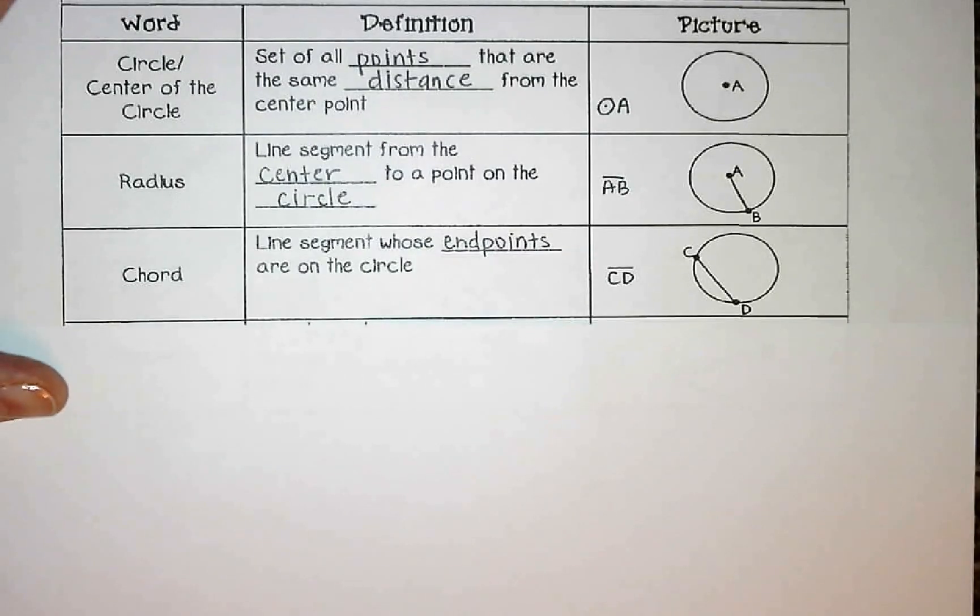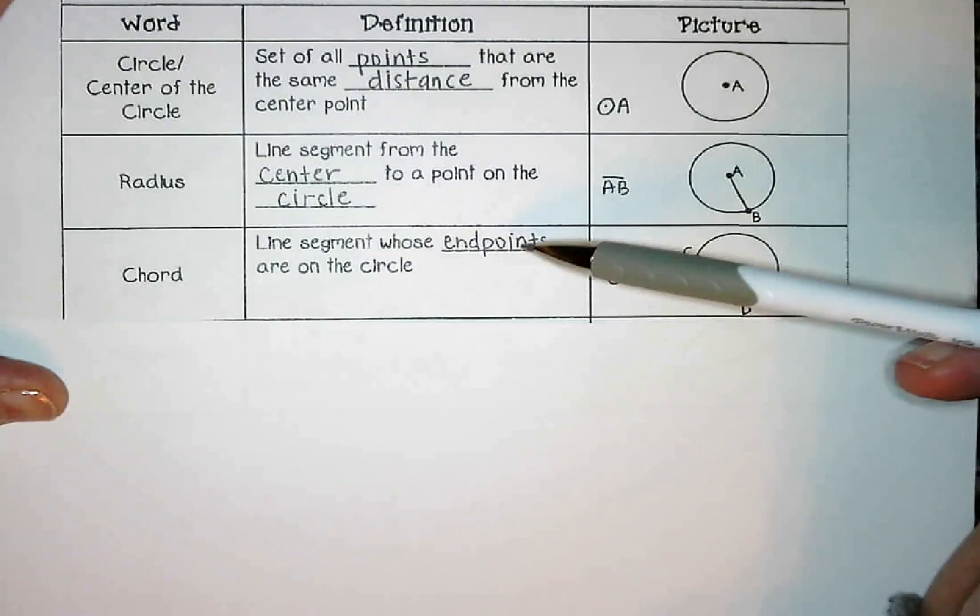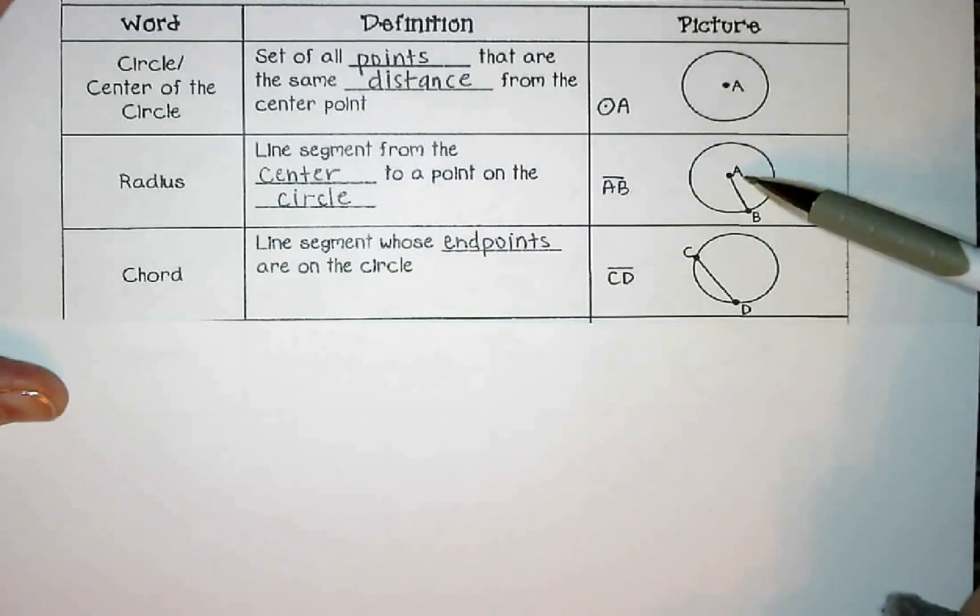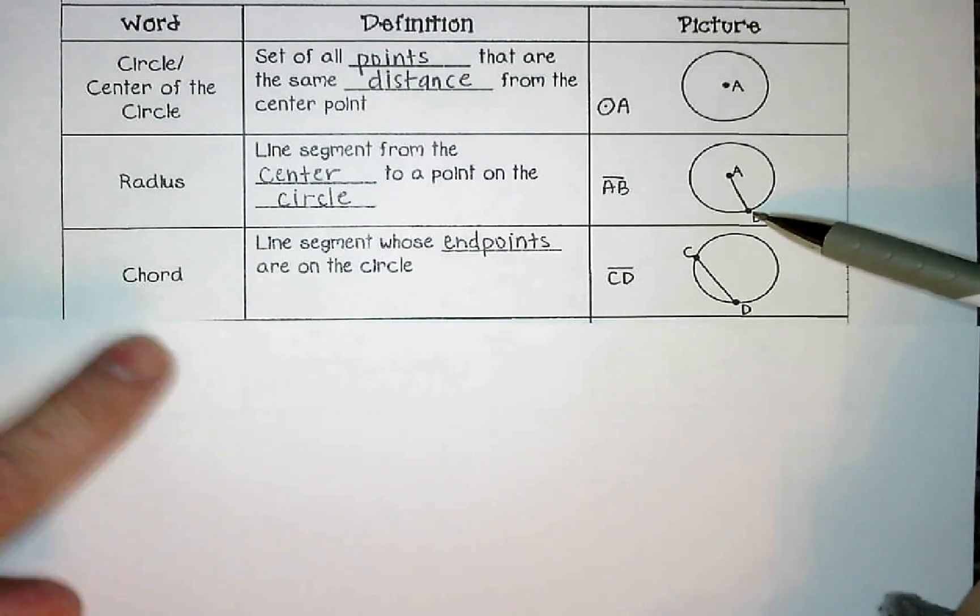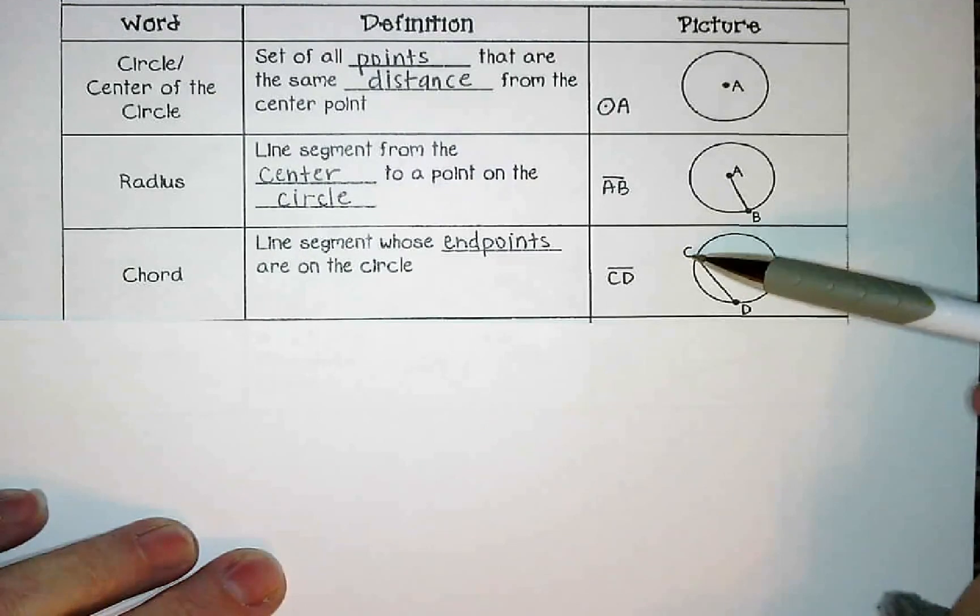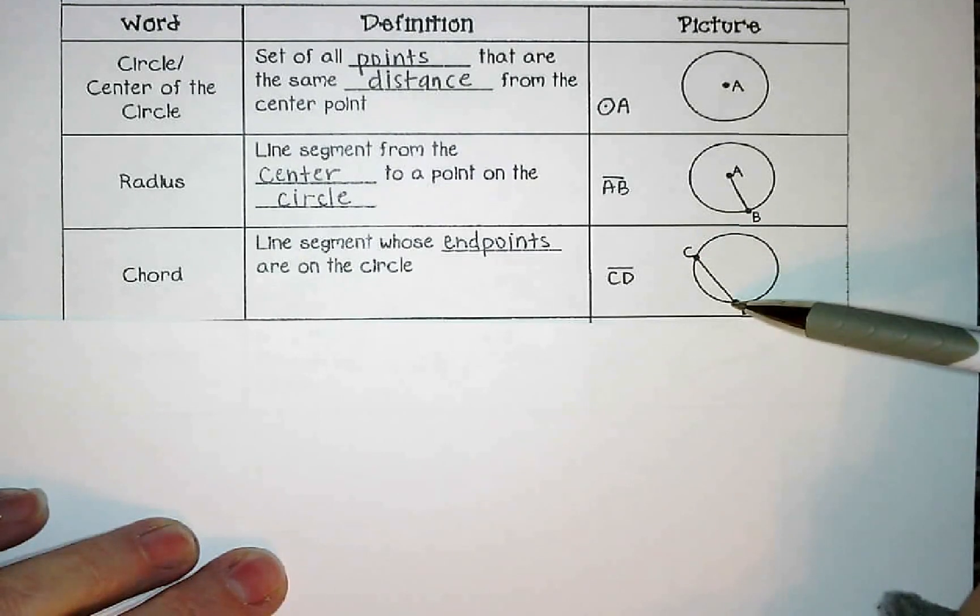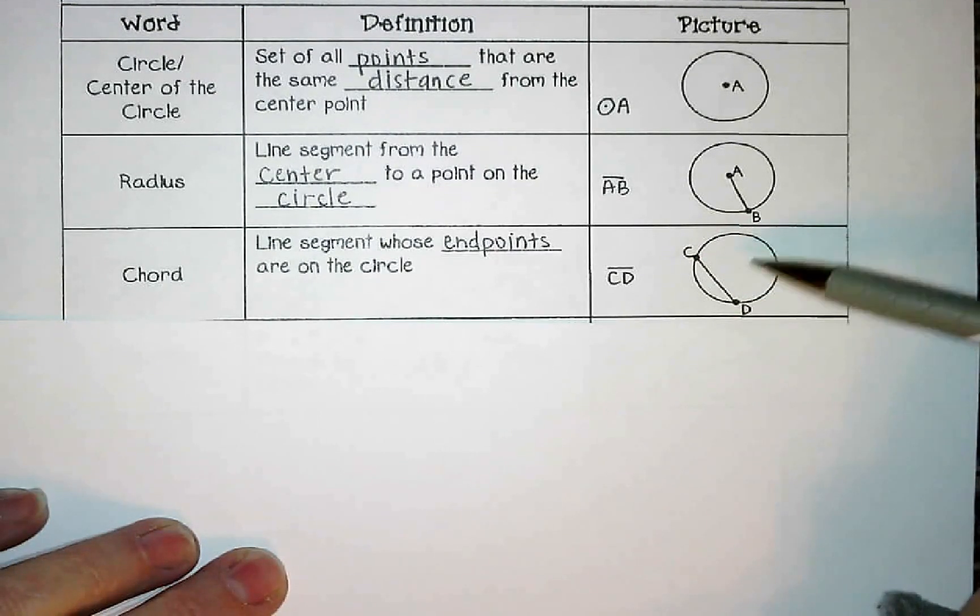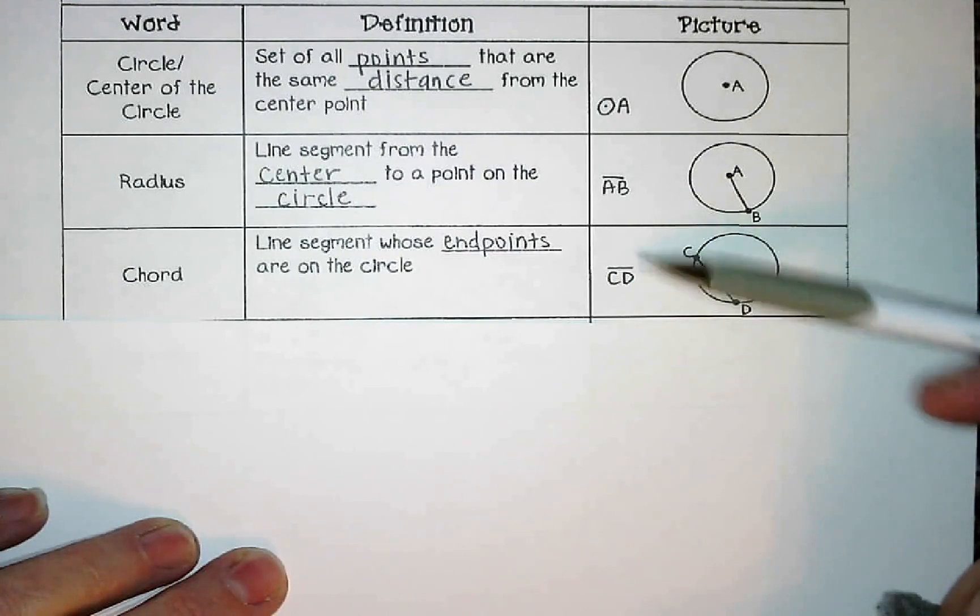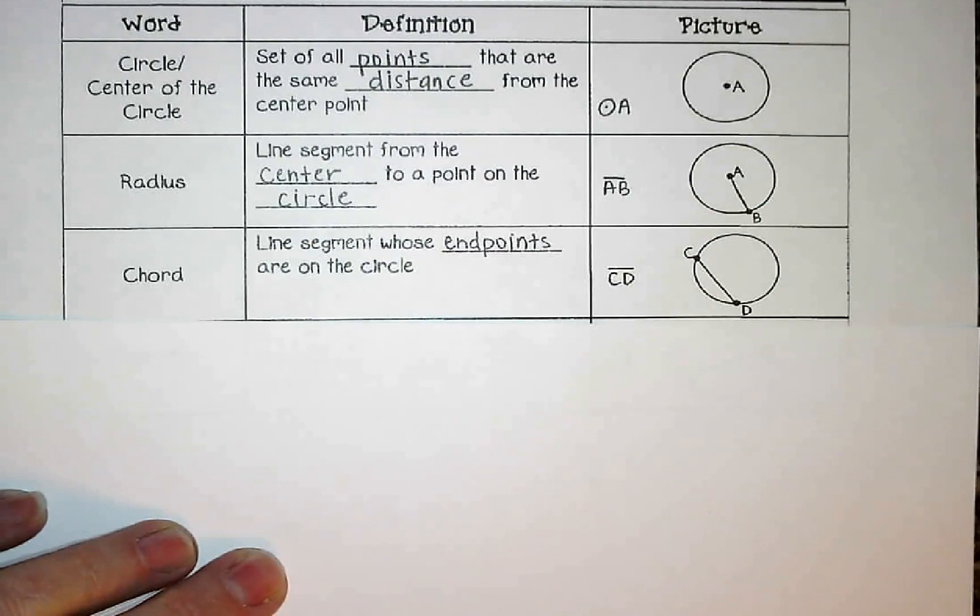Chord is a line segment whose endpoints are on the circle. So when we have radius up here, we had one endpoint of the segment in the center and one point on the circle. We call this a chord. I know it looks like chord, but it's pronounced chord. And that's where we have two points that are on the circle and the segment that connects those two. So it could be two points anywhere on the circle as long as they are connected and both of those endpoints are on the circle. It's called a chord labeled with a segment CD.